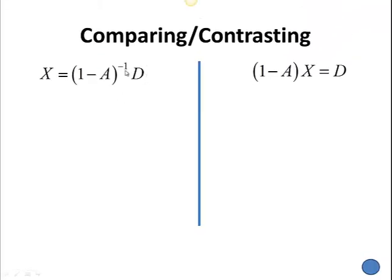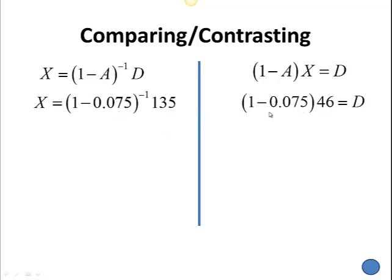I want to do some comparing and contrasting. I've just done an example where we found production level knowing demand. In my earlier video, I looked at how much we had left over for demand when we knew the production level. So these are the two formulas: one where we know demand and look for production level, and one where we knew production level and found how much was left over for demand — which was a production level of 46,000 yielding a demand of 135,000.